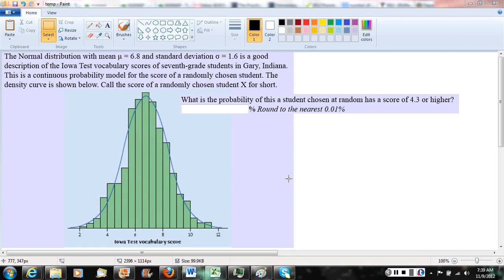Okay, testing? All right, welcome to the video. So here we're looking at a probability question involving a normal curve. We've got a normal distribution with mean 6.8, standard deviation 1.6.